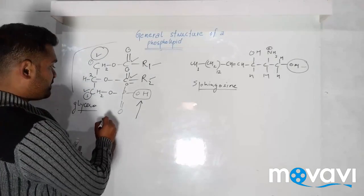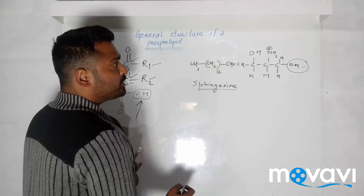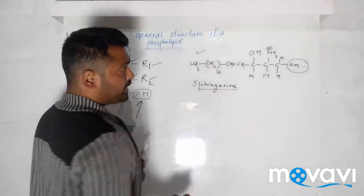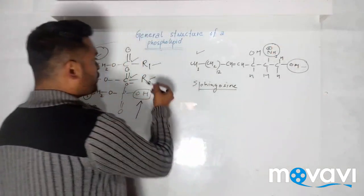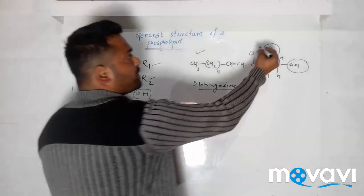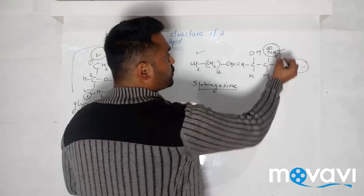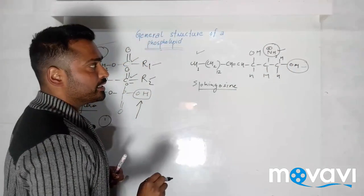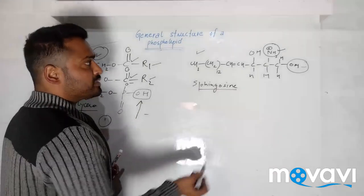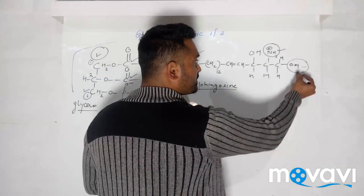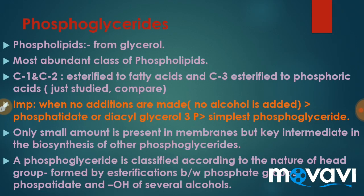In the case of sphingosine — the 18-carbon compound — the fatty acid chain is attached to the amino group through an amide linkage. The alcohols include serine and choline. This gives us the sphingosine-based phospholipid category, which is phosphoglycerides.